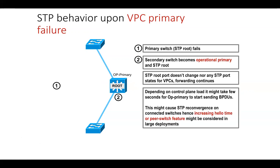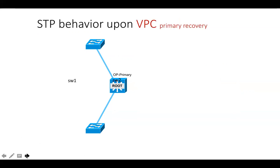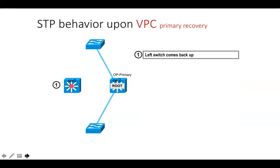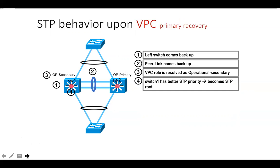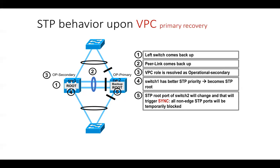To overcome this, we can either increase the convergence time in STP or use peer switch. But you may say the control plane is healthy and there's no issue when primary goes down — so why do we need peer switch? When Switch 1 comes back, it was the original STP root, so it reclaims that role. This triggers port state changes on Switch 2, initiating the synchronization process. As a temporary solution, some ports go into blocking state, which can trigger three to six ping drops in the environment.